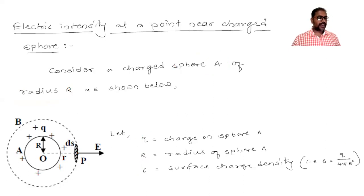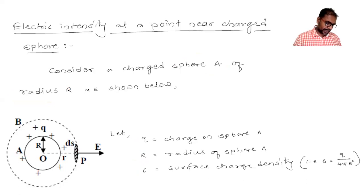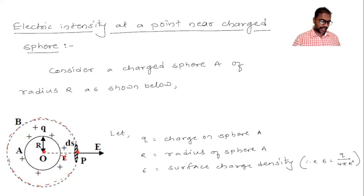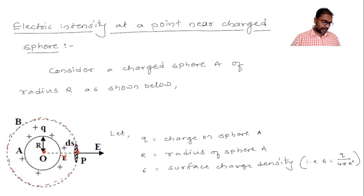We have to find out electric intensity at point P, which is at a distance r. To do this, we draw a Gaussian sphere of radius small r. A Gaussian sphere is one where electric intensity is the same at every point on it, because it is equidistant from charge sphere A. We also define a small area element dS on this Gaussian sphere.